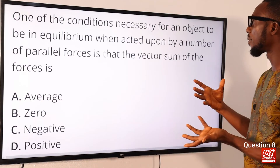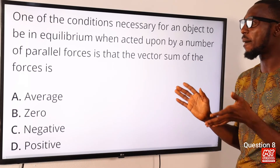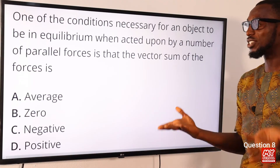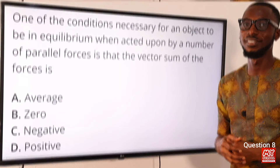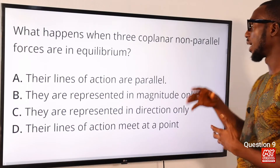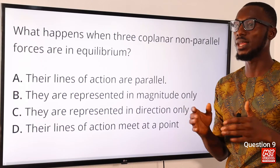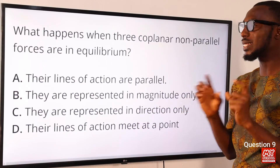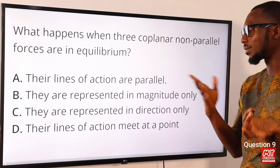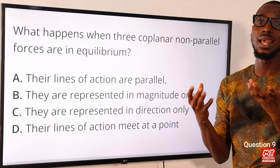Question eight: one of the conditions necessary for an object to be in equilibrium when acted upon by parallel forces is that the vector sum of the forces in any given direction is zero. This is covered in the topic of equilibrium of forces. The correct option is option B: zero. Question nine: when three coplanar non-parallel forces are in equilibrium, these forces must act in a plane and their lines of action must intersect at a common point. The correct option is option D.